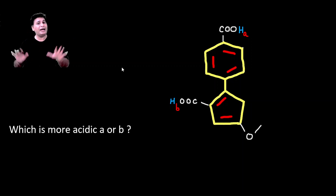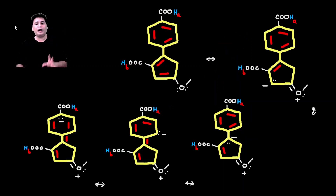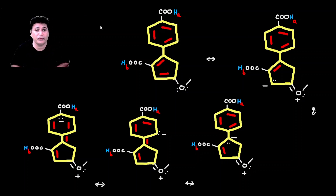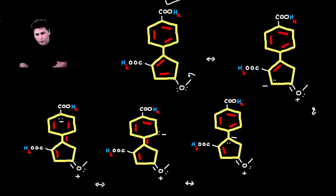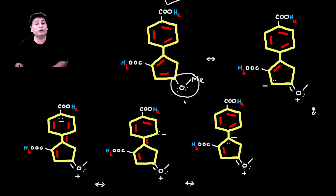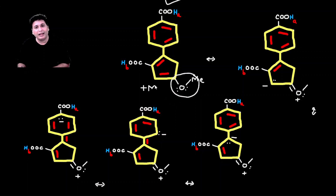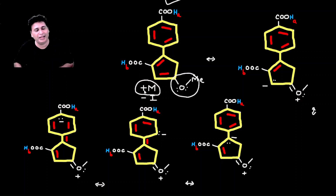Before we start pulling the hydrogens one by one, I want to emphasize a very important feature of this compound. In this compound, there are two COOH groups, and there is a very important methoxy group — an oxygen with a methyl group attached. This methoxy group has a very important feature: it can exert a +M effect and a -I effect. The +M effect is most important in our context; the -I effect will also come into play afterwards.